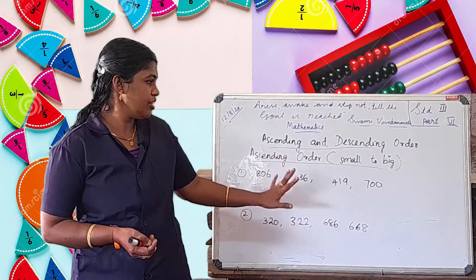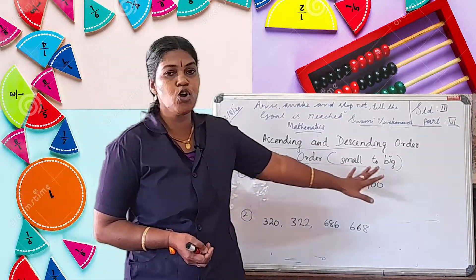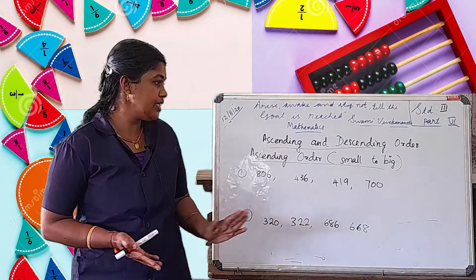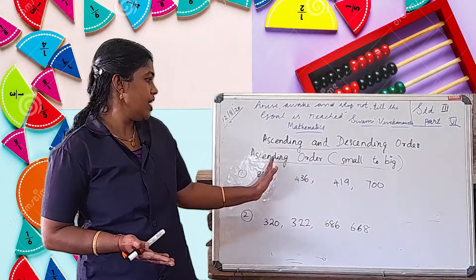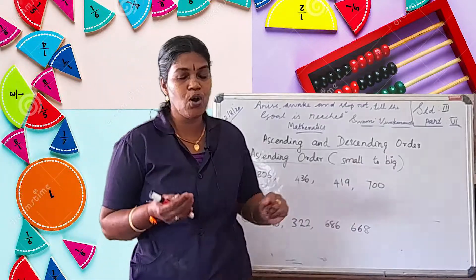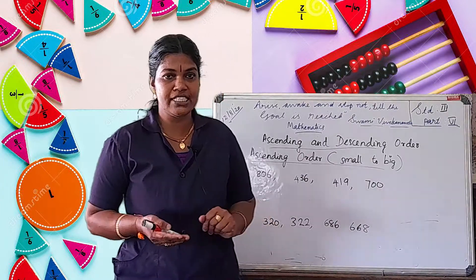Ascending order means small to big. We have some numbers, and in ascending order we arrange from the smallest number to the biggest number.